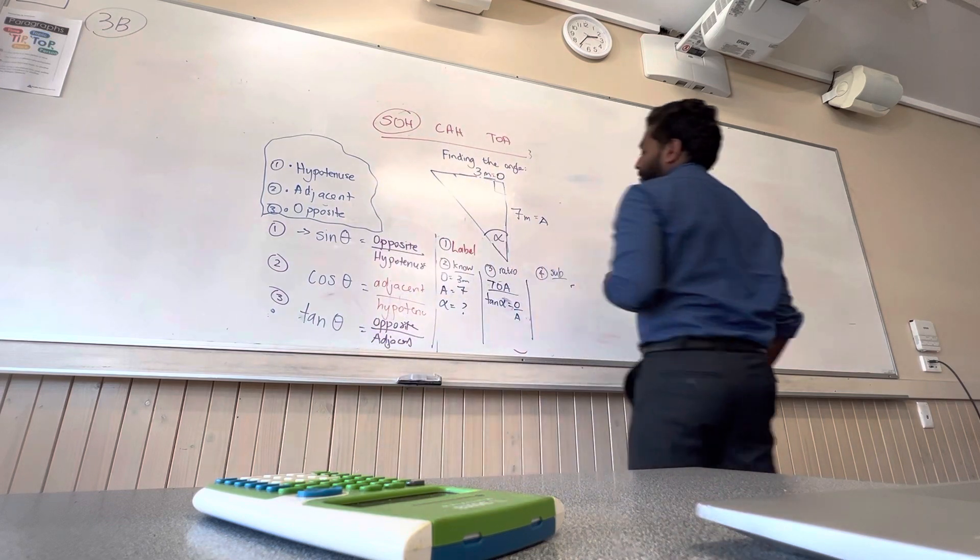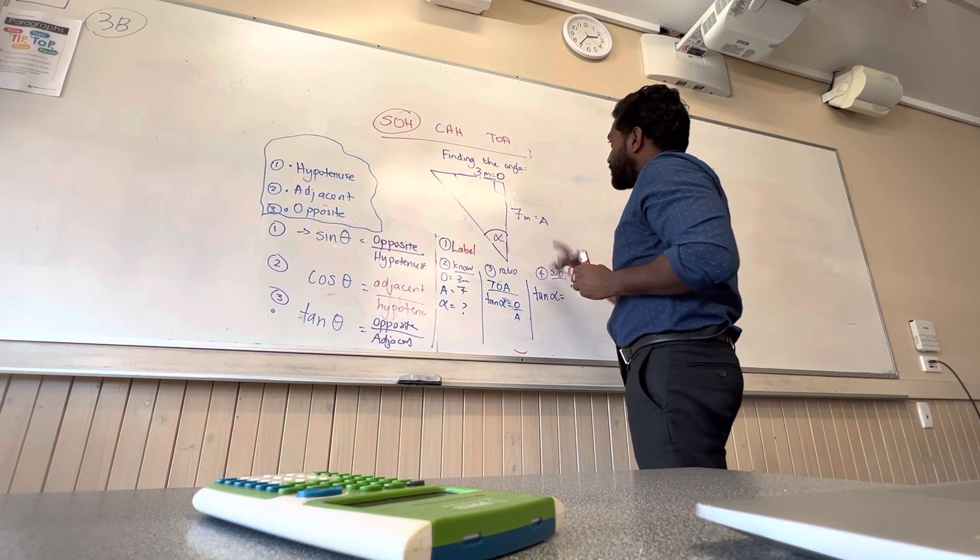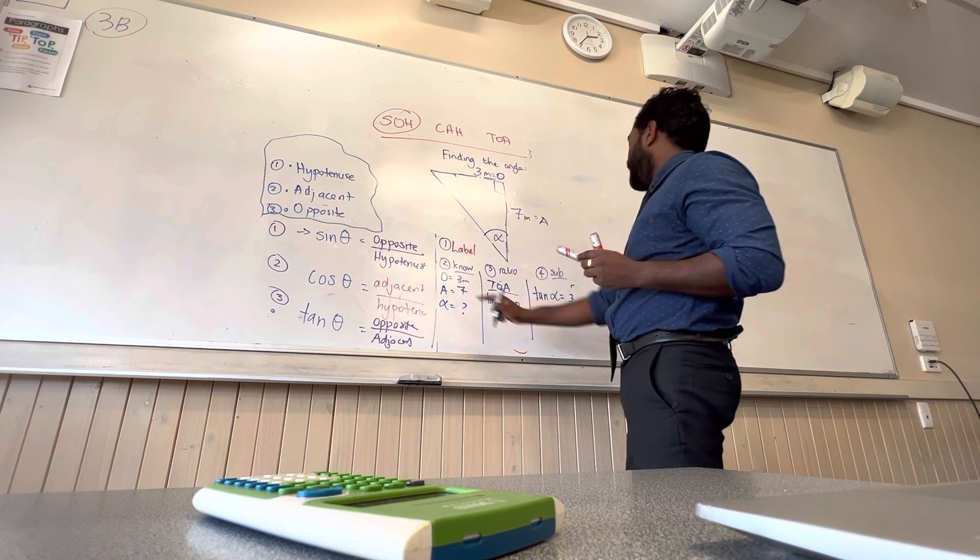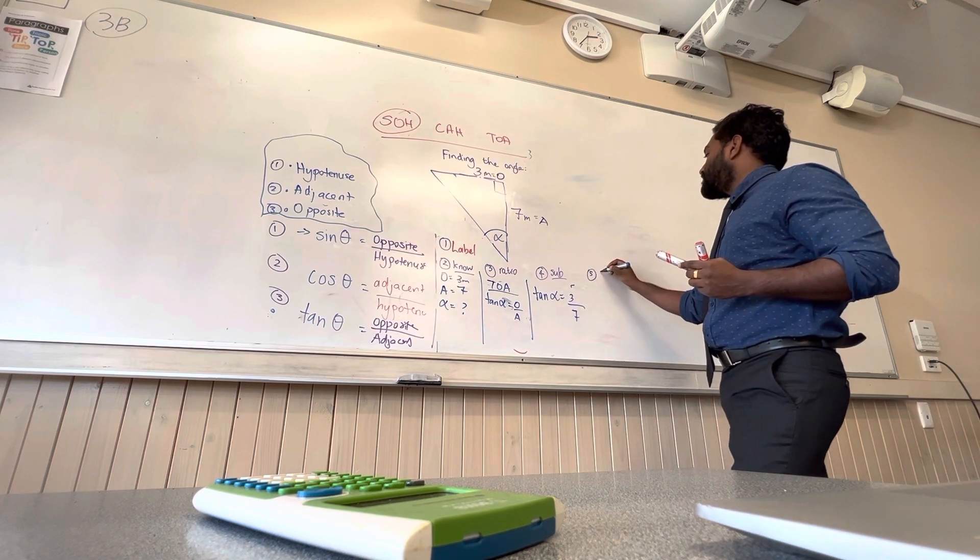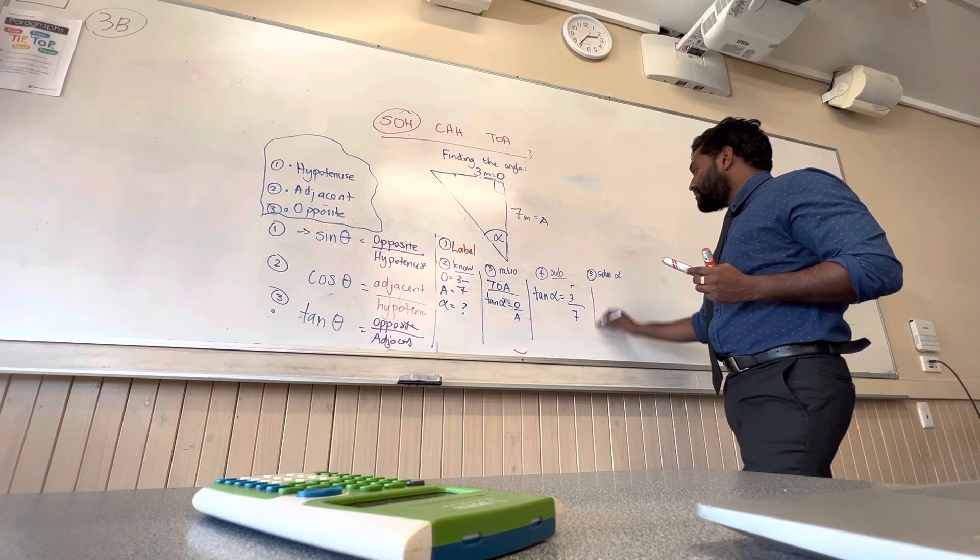So you've got tan alpha equals three, which is our O - we look at what we know - and then our A, which is seven. Then we've got to solve for alpha.